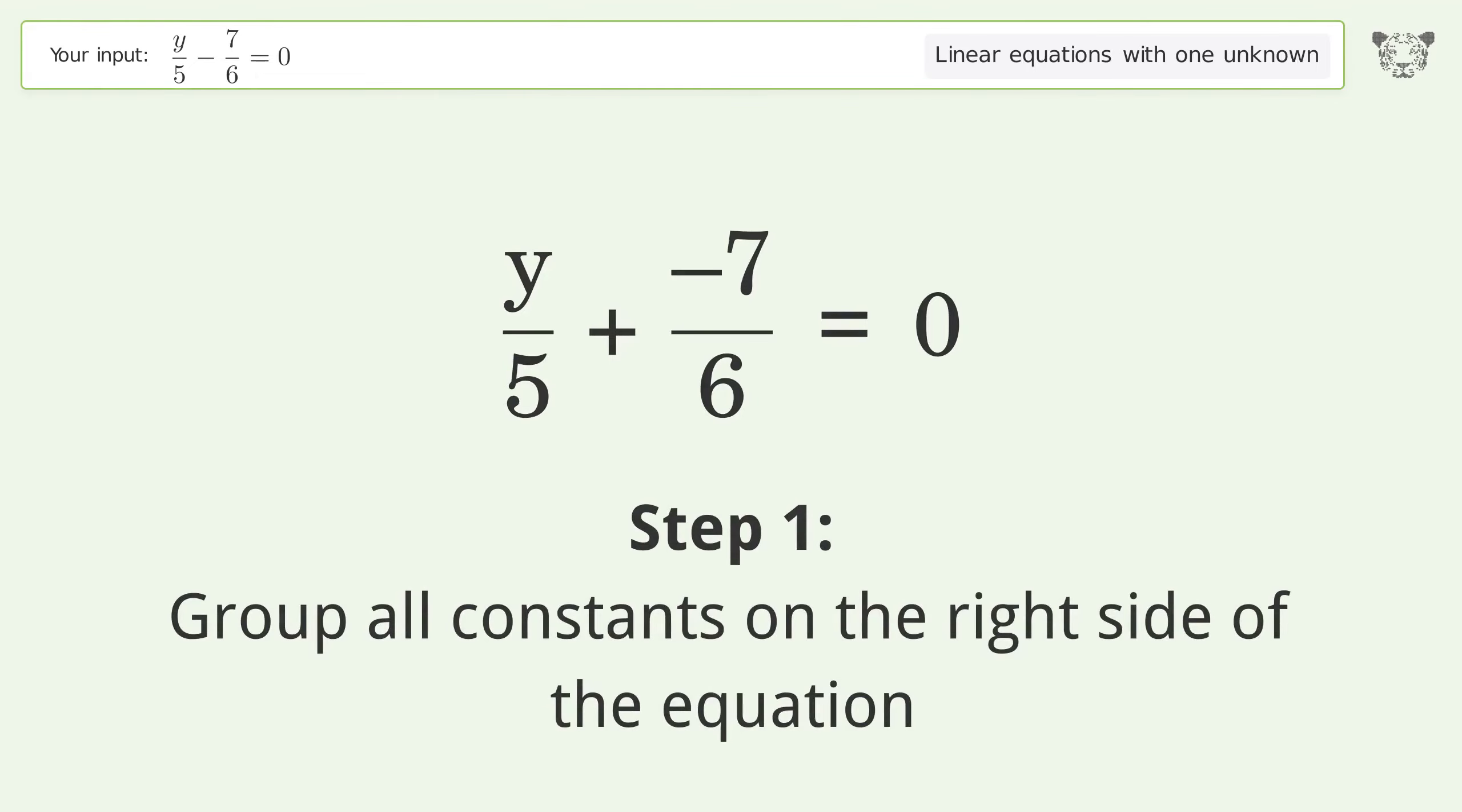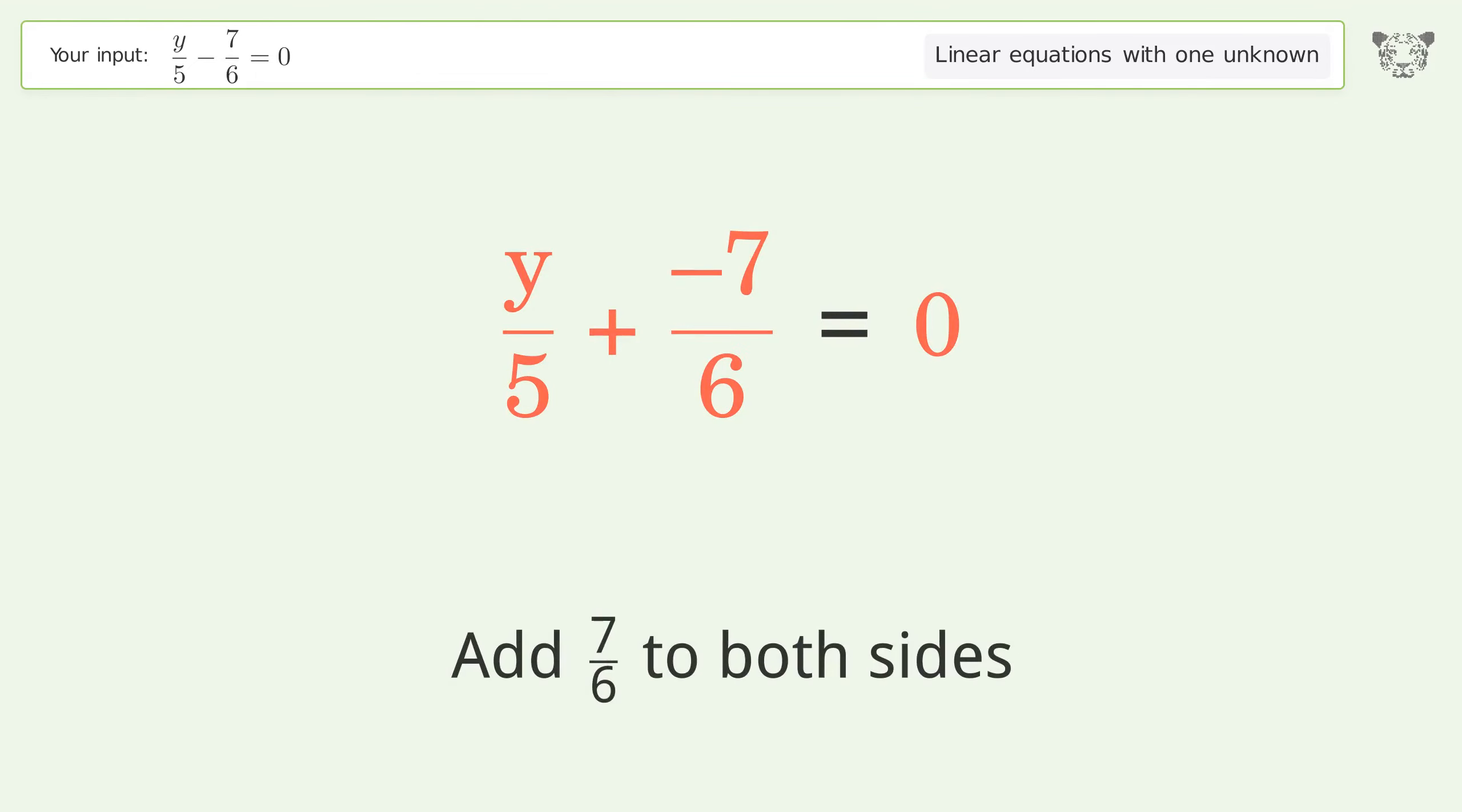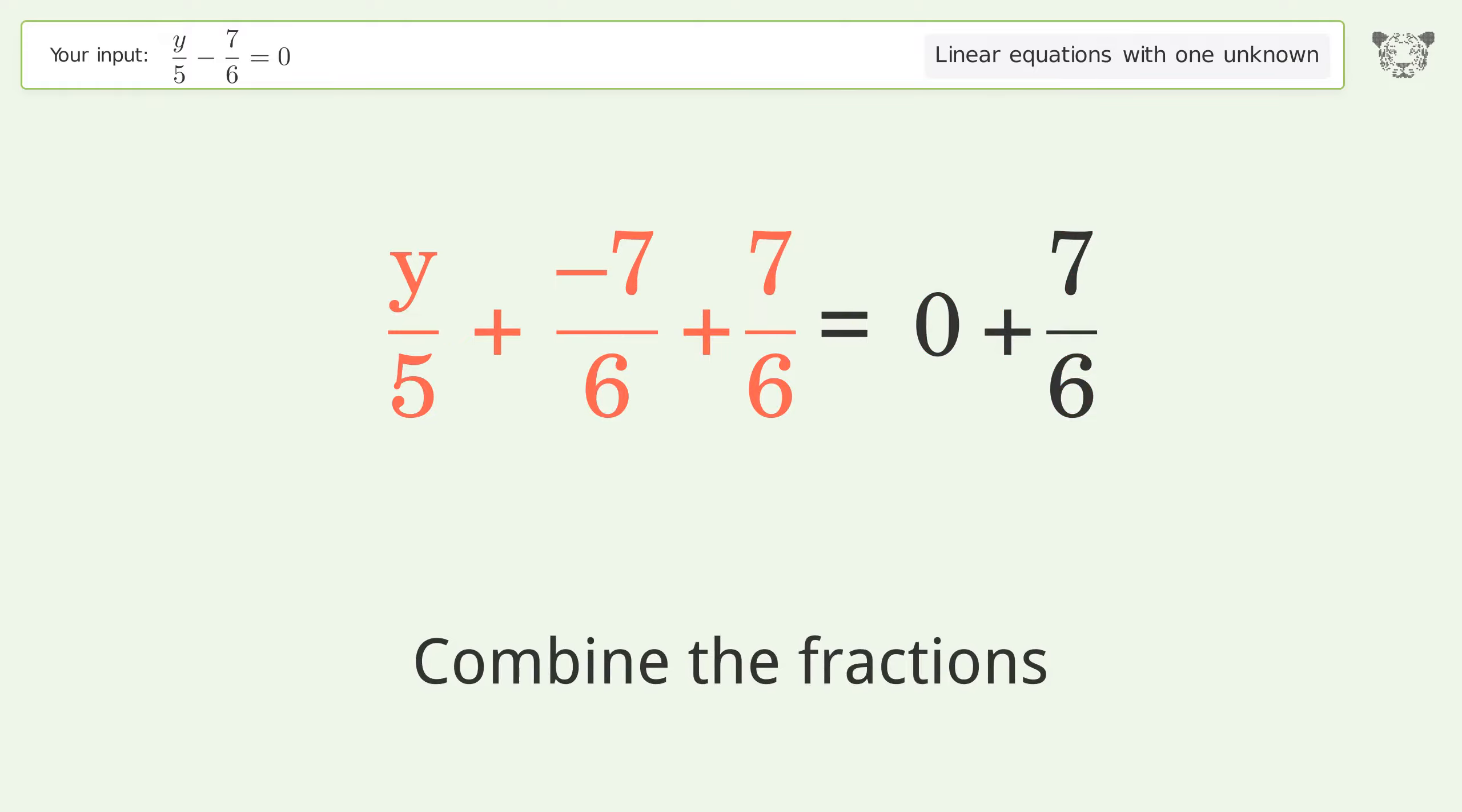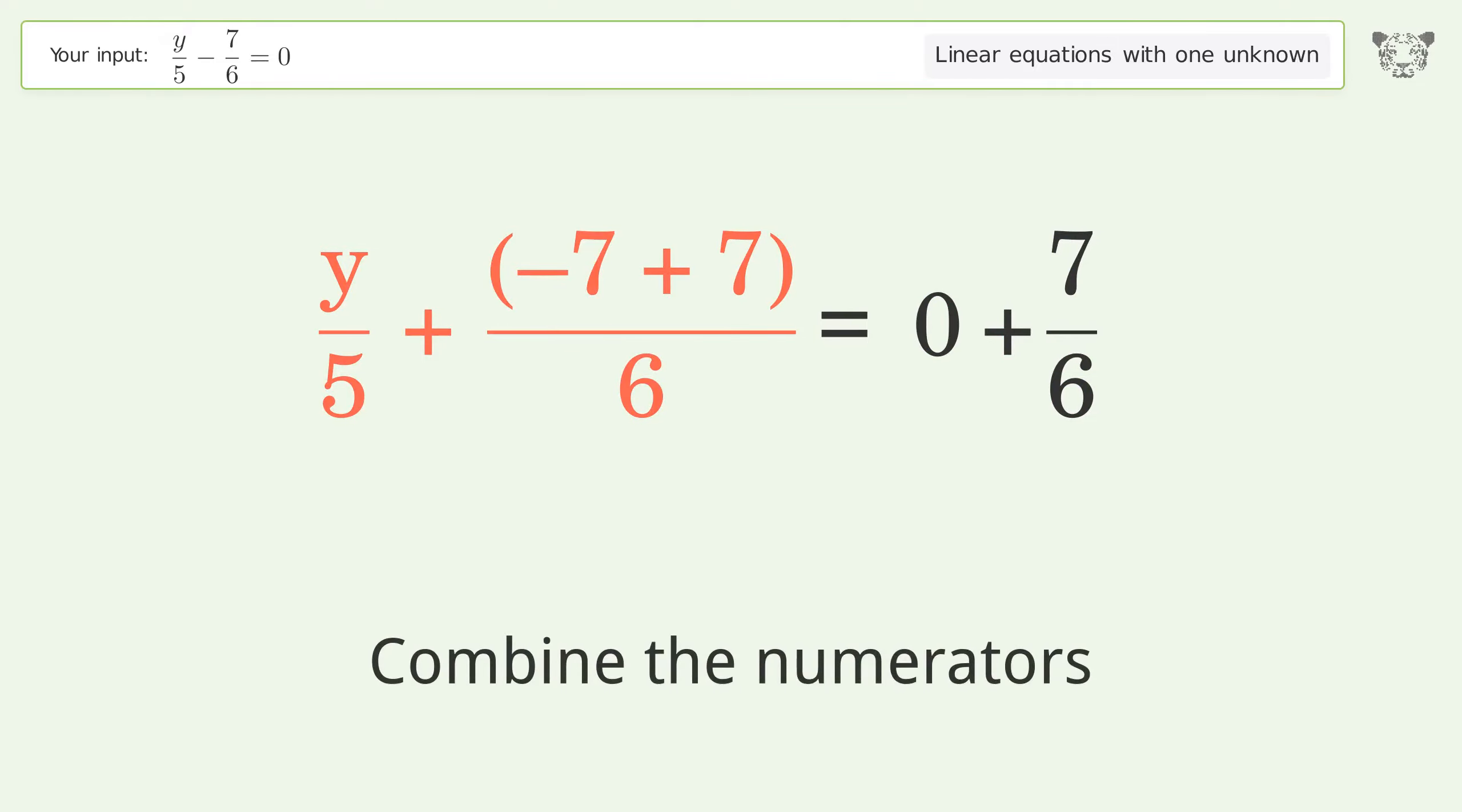Let's solve it step by step. Group all constants on the right side of the equation. Add 7 over 6 to both sides. Combine the fractions.